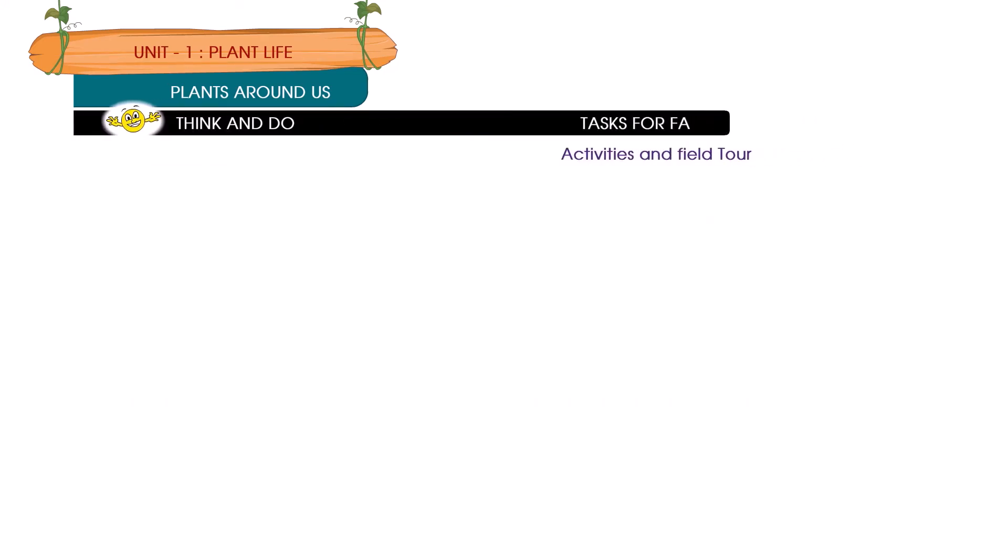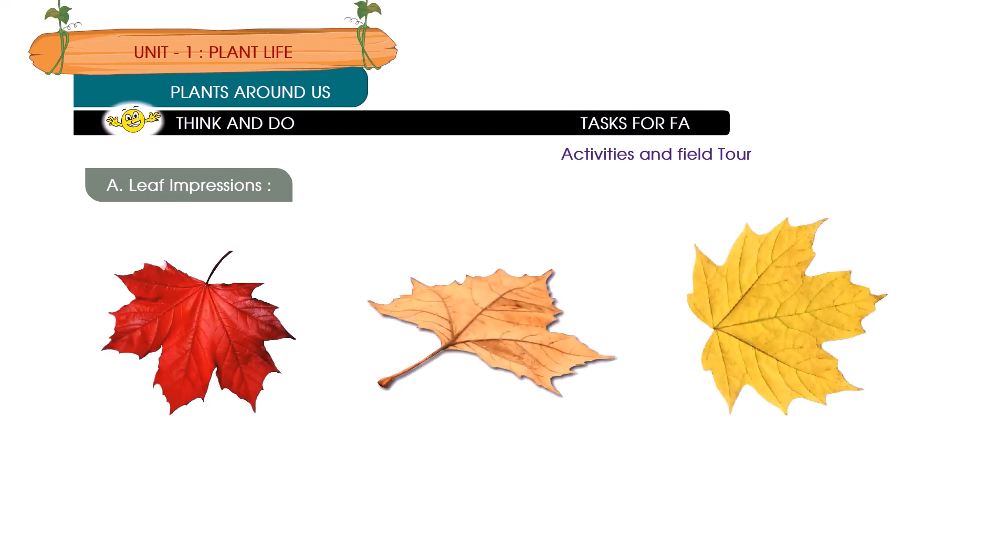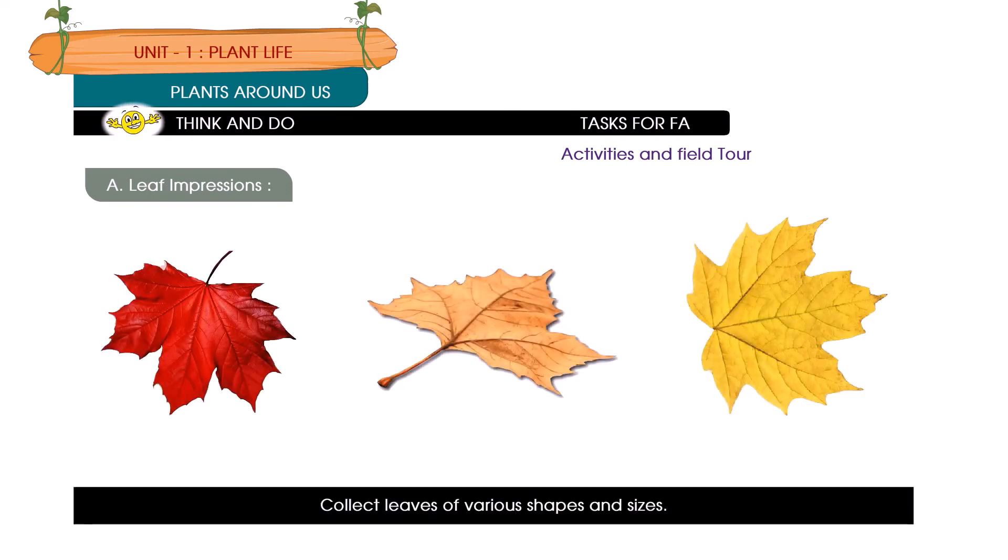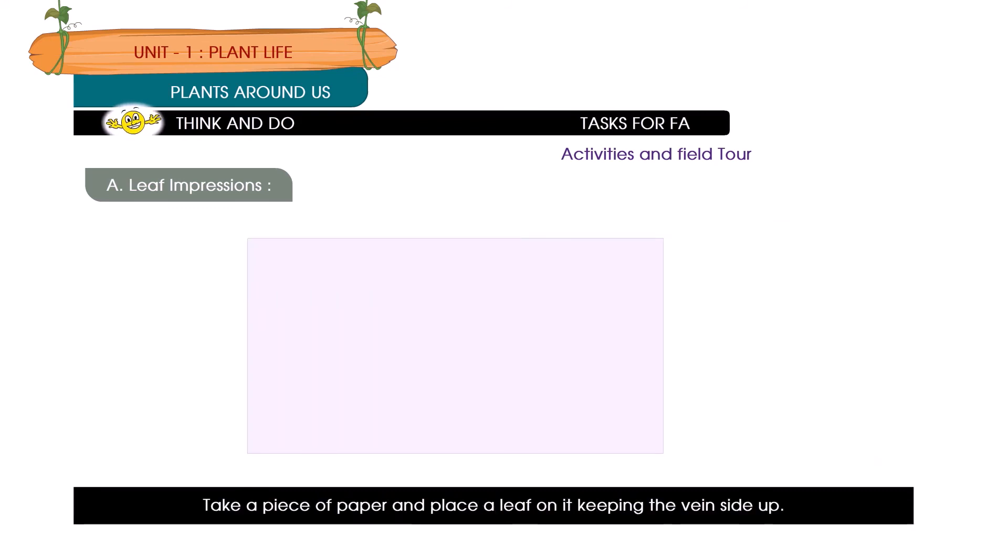Think and do. Leaf Impressions. Collect leaves of various shapes and sizes. Take a piece of paper and place a leaf on it keeping its vein side up. Lay another sheet of plain white paper over the top of the leaves. Select a crayon and peel off the paper wrapper. Turn the crayon on its side and gently rub over the top sheet of the paper. The image of the leaf will magically appear on the paper.